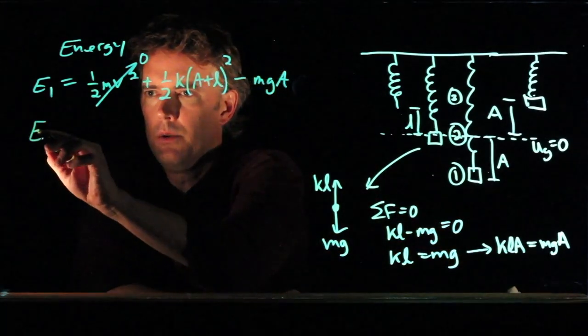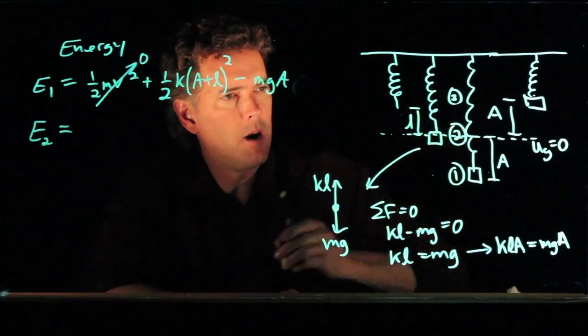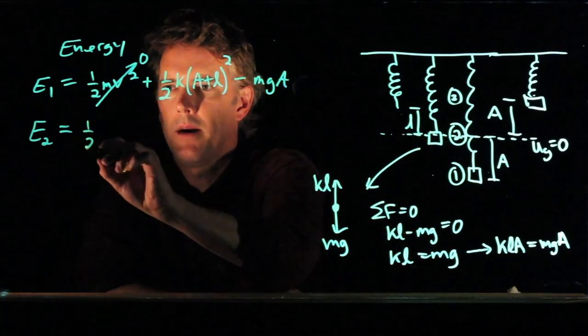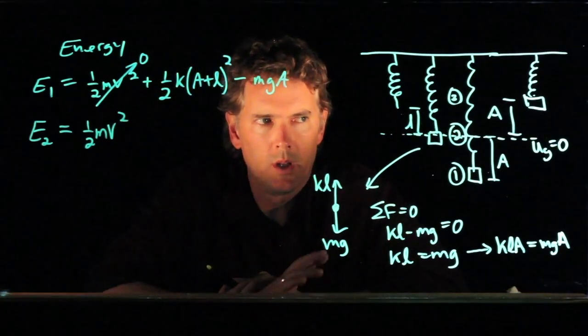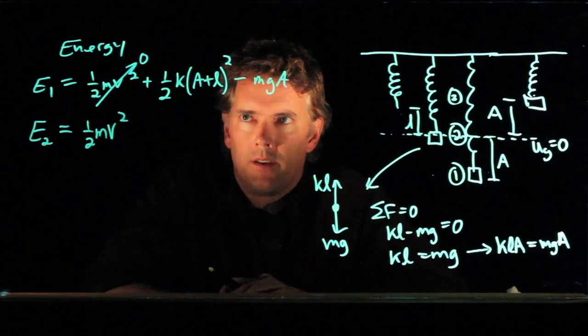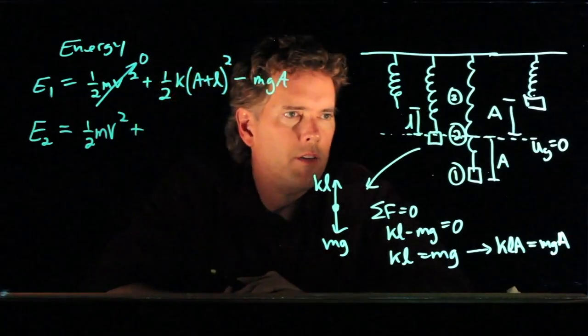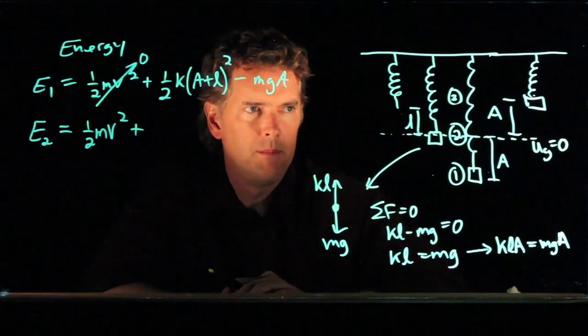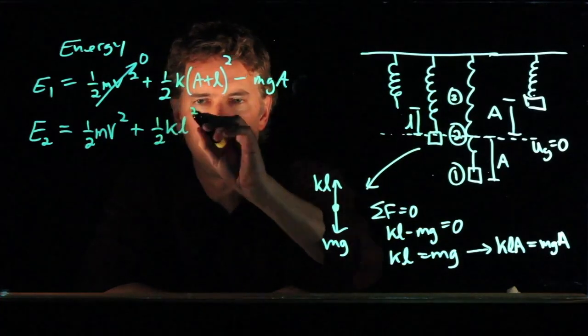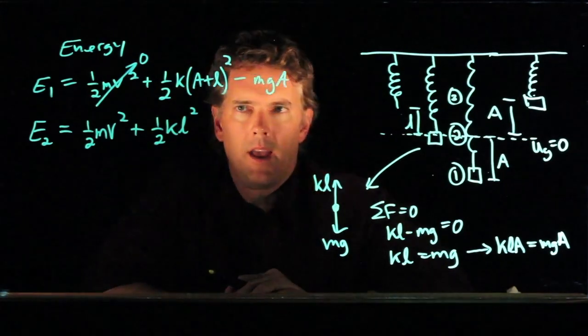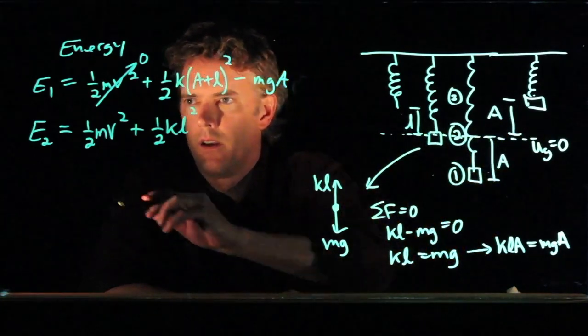All right, what about E2? E2 is when the block is moving back upwards. It has kinetic energy at that point. We suspect that's going to be the maximum speed, but we're not totally sure yet. It also has a little bit of spring potential energy, because even when it's at position two, that spring is still stretched a little bit. It's stretched by L. And we have zero potential energy due to gravity, because we said that's where it equals zero.